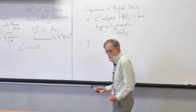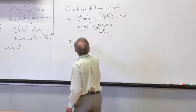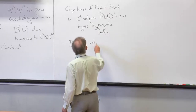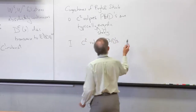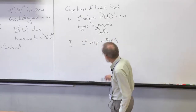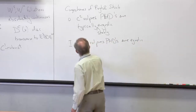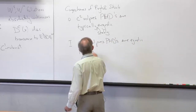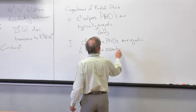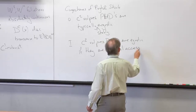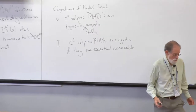This conjecture was broken down into two parts. Part one is that C2 volume-preserving partially hyperbolic diffeomorphisms should be ergodic if they have a property. The property that you need is essential accessibility.